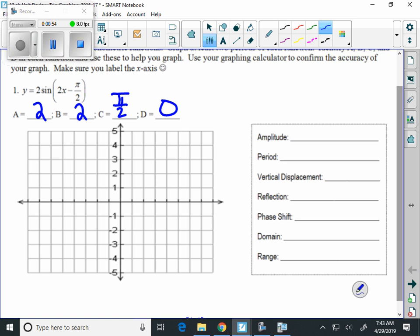And from there we can identify some of the work over here. Our amplitude is 2. Again, that's coming from the A value. Period is determined by taking 2 pi divided by 2, 2 pi divided by the B, which is pi. The vertical displacement, we're not moving up or down. That's coming from the D. Reflection, we don't have any reflections in this graph.